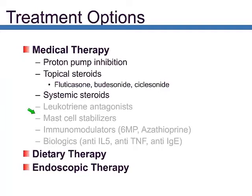Regarding treatment options — focusing on the most common — proton pump inhibition is very important, at least in the early stages, both for diagnosis and for decreasing inflammation in some patients. A standard prescription dose equivalent to omeprazole 40 milligrams is typically used for about six weeks prior to a repeat endoscopy. If eosinophils are still present at that point, the patient is then diagnosed with eosinophilic esophagitis.